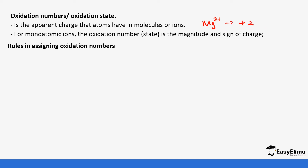Sometimes we also have molecules and ions. For example, if we take nitrate ions, the oxidation number is negative 1. This is the apparent charge. The only difference is the position of the sign — the plus or minus comes before the number in oxidation notation.